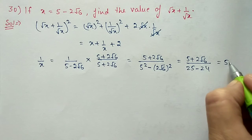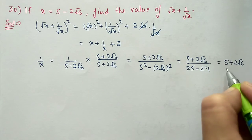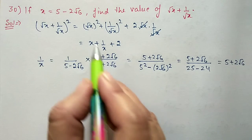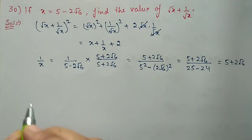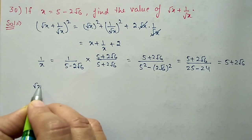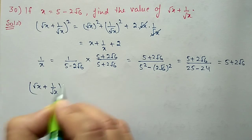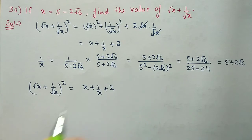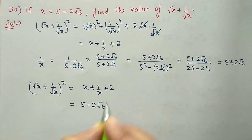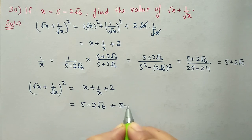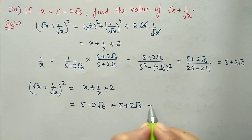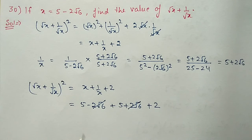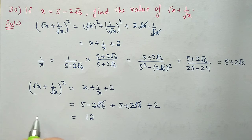So 1/x = (5 + 2√6)/1 = 5 + 2√6. Now substituting: (√x + 1/√x)² = x + 1/x + 2 = (5 − 2√6) + (5 + 2√6) + 2. The √6 terms cancel, so 5 + 5 + 2 = 12.